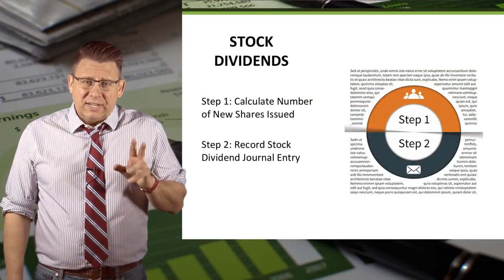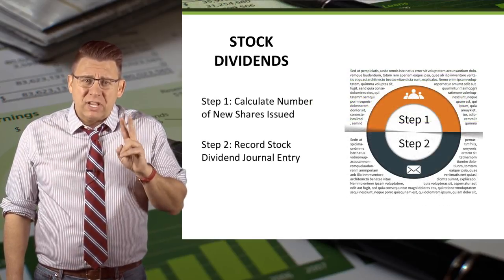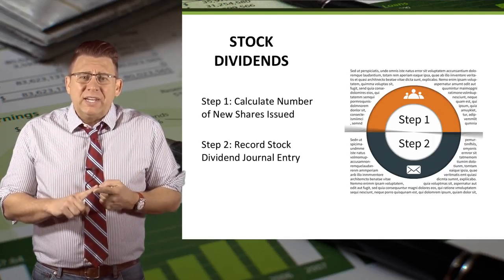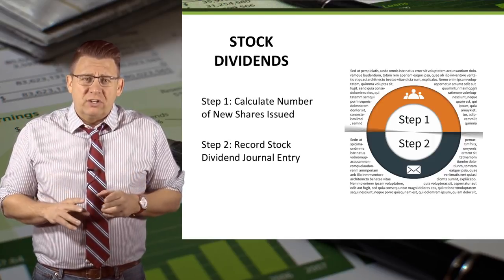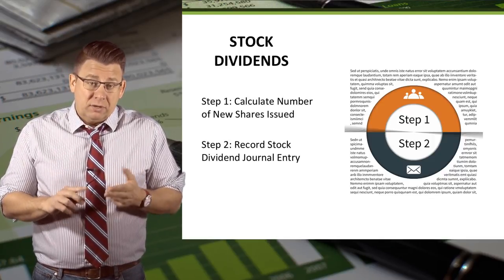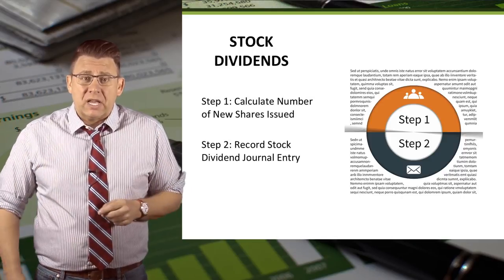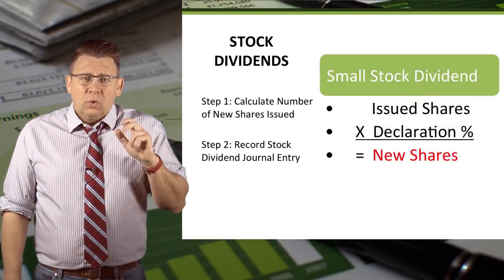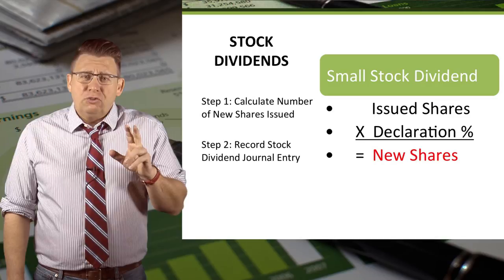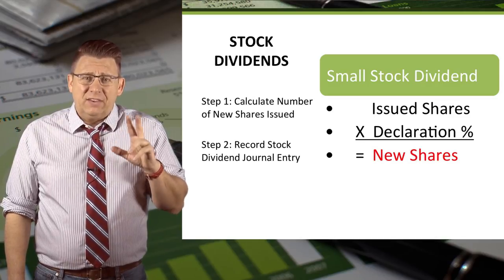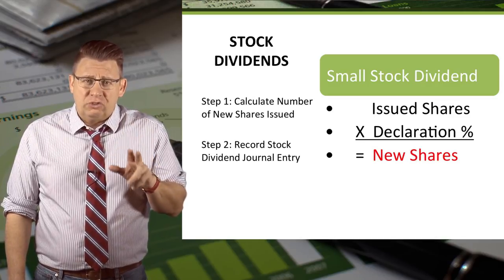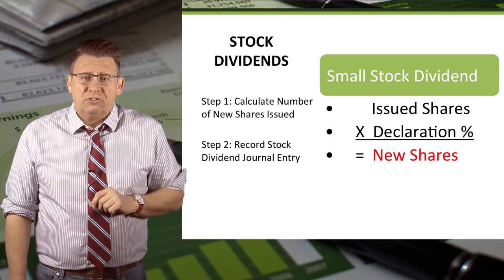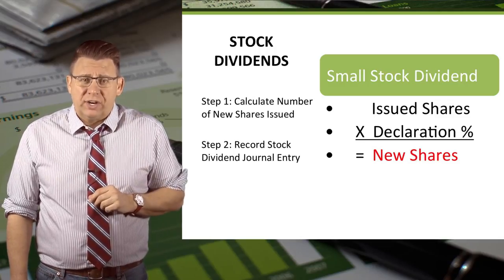Recording stock dividends is a two-step process. Step one is to calculate the number of new shares to be distributed, and step two is recording the stock dividend journal entry. We calculate the new shares to be distributed by taking the issued shares times the declaration percentage — this equals the new shares.